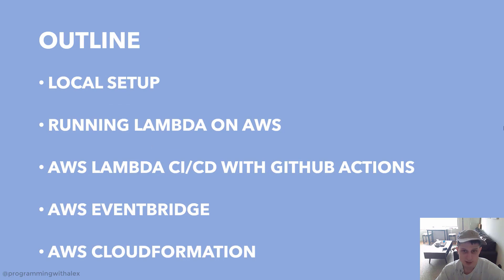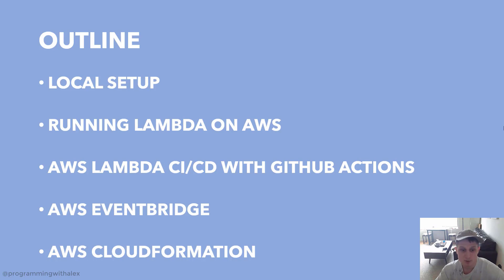So what's the outline going to be for this video series? We're going to start off with the local setup — clone the repo, walk through the code locally, and run it. Then we're going to run it on Lambda on AWS, modify the Lambda function using CI-CD with GitHub Actions, use AWS EventBridge to schedule it to run automatically, and finally use AWS CloudFormation to create a YAML setup script to create all the components necessary to run the Lambda function automatically without having to do anything on the Management Console.